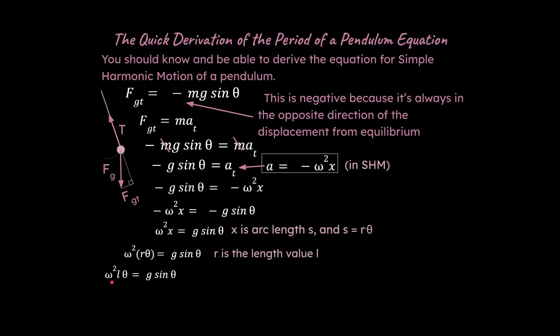Next, we need to remember what ω² equals. One way of looking at omega is that ω = 2π over the period T. So we substitute that omega value in and square it. There is one really important concept we need to discuss as well — the small angle approximation.